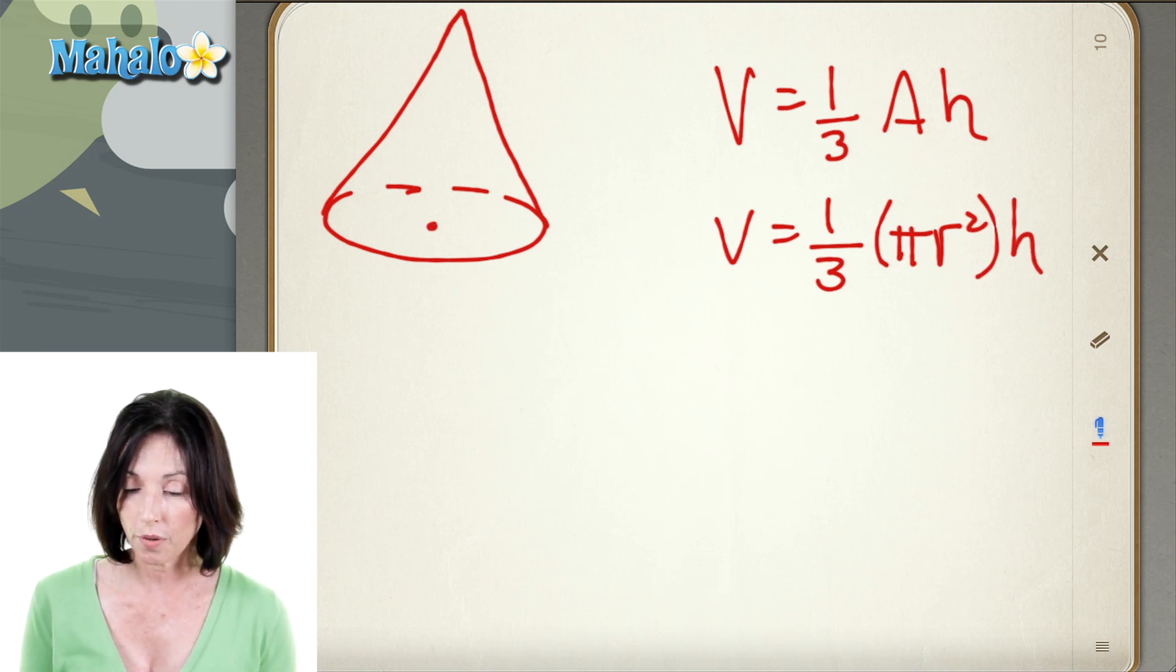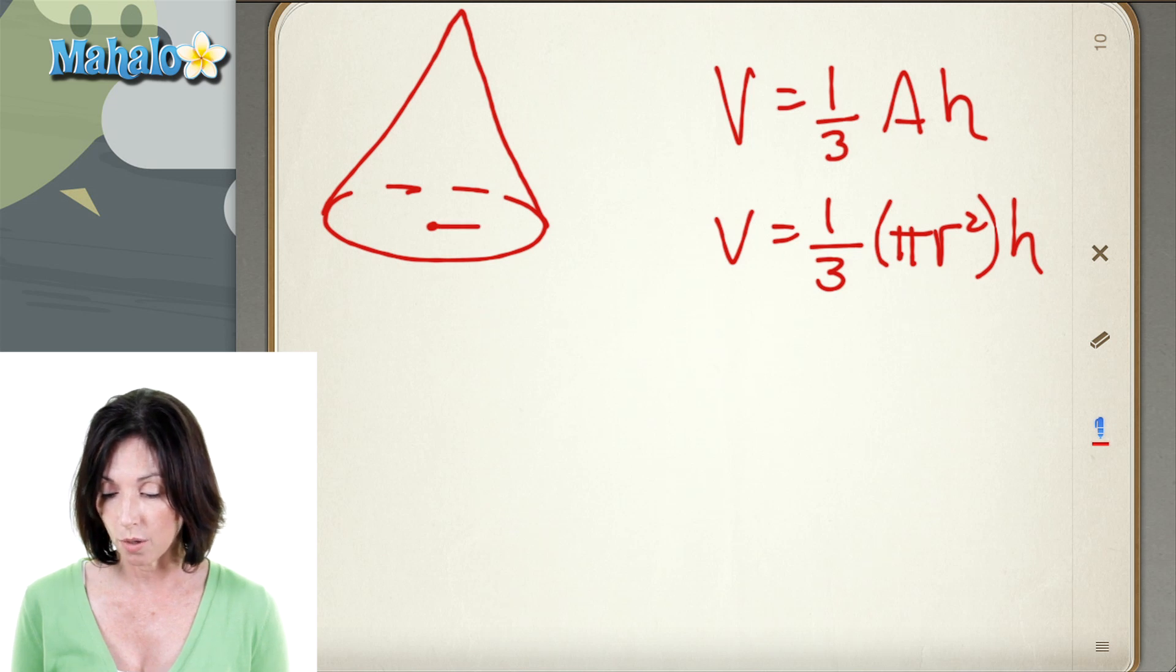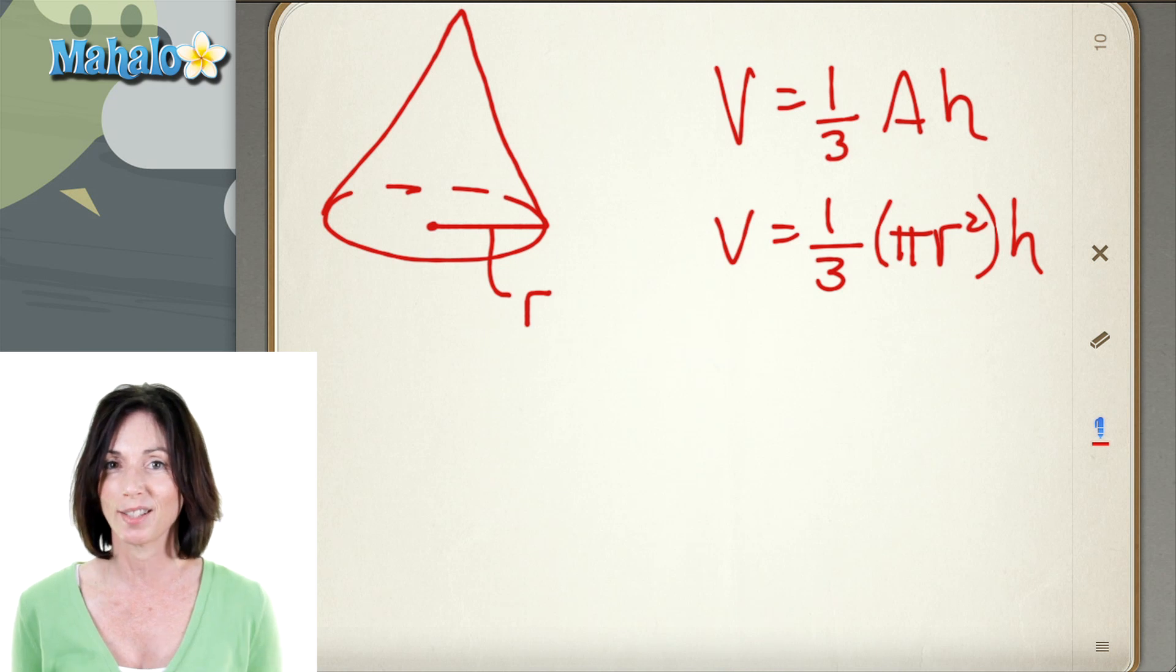So remember that when you're finding the area of the base of the cone, you want to make sure that you know the radius. That would be that distance halfway across the circle.